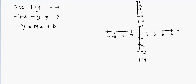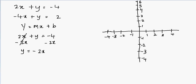Let's solve the first equation for y first. We have 2x plus y equals negative 4. To solve for y, I'll subtract 2x on both sides to eliminate 2x from the left-hand side. Here 2x and negative 2x cancel each other. On the left-hand side I'm left with y, and on the right-hand side I have negative 2x minus 4. This is now in the form y equals mx plus b.